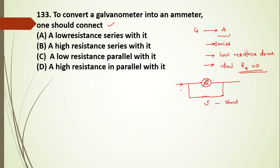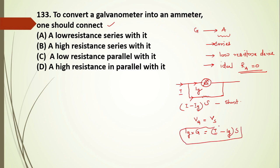Suppose total current I flows through the circuit, and Ig is the galvanometer current for full deflection, then the current through the shunt resistance is I minus Ig. Since it is a parallel network, the potential across the galvanometer equals the potential across the shunt: Ig × G = (I − Ig) × S. To convert into an ammeter, connect a low resistance in parallel with the galvanometer. The answer is C.